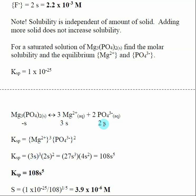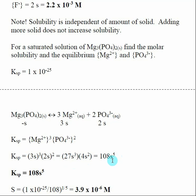This is a more advanced calculation. (3S)³ gives 27S³, and (2S)² gives 4S². Multiplying together: 27 × 4 = 108, and S³ × S² = S⁵. So KSP equals 108S⁵. To find S, I divide KSP by 108 and then take the fifth root. I take 1 × 10⁻²⁵ divided by 108, then take the fifth root using the calculator function, entering 5. This gives S equal to 3.9 × 10⁻⁶ molar.